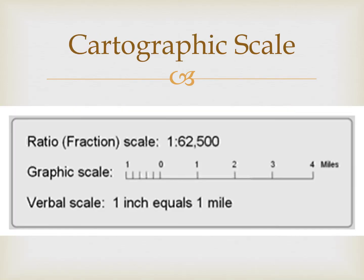There are three ways to communicate cartographic scale. First, a verbal or written statement, which you see on the bottom. Second, a representative fraction, abbreviated RF scale, which you see on the top. Or third, a graphic or visual scale that you see in the middle.